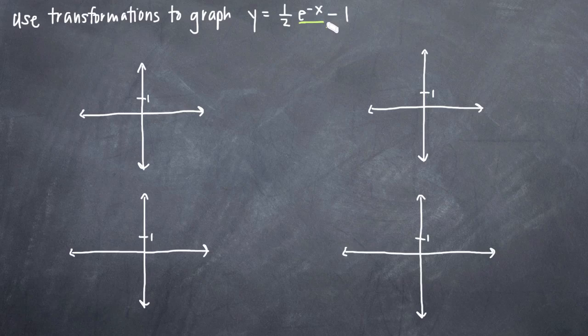We can start with that and then we can change e to the x into e to the negative x, and then we can apply the one-half, and then we can apply the negative one. So here's what that could look like.